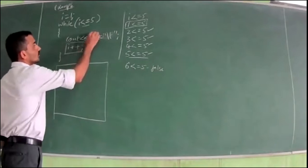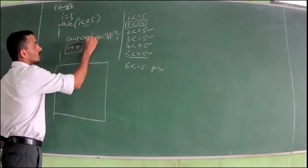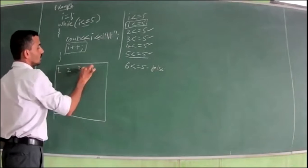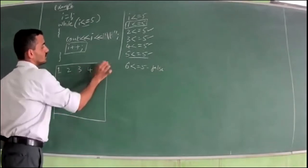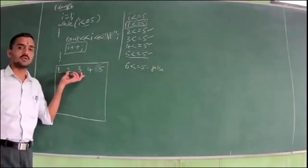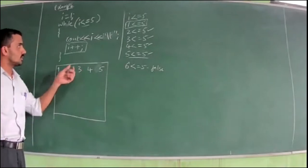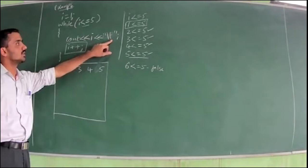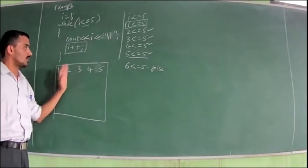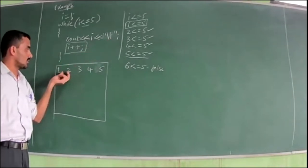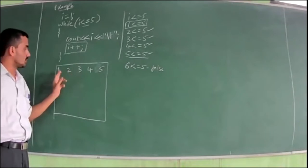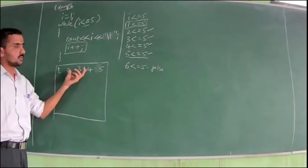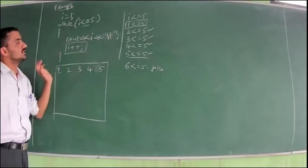Look at what value we are printing — we are printing the i value. So it will print 1, 2, 3, 4, 5. It will leave spaces in between the values because \t is the tab. T means tab — it works like a horizontal tab. So between one value and another, some horizontal space is left because of this \t.